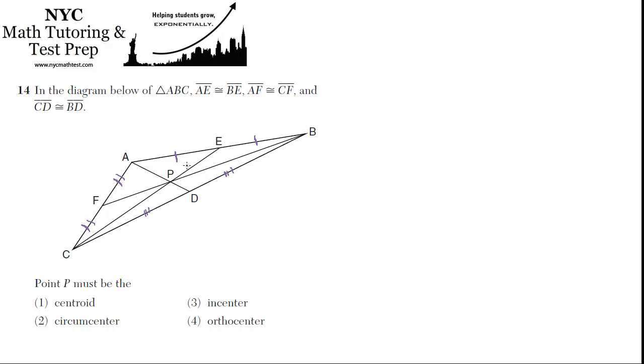So if AE is congruent to EB, then what does that make point E? That makes it the midpoint of AB. And if we have a line drawn from C, the opposite vertex, to the midpoint at E, what is that line called? That's called the median.